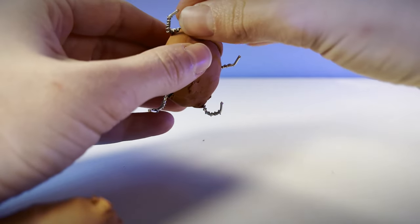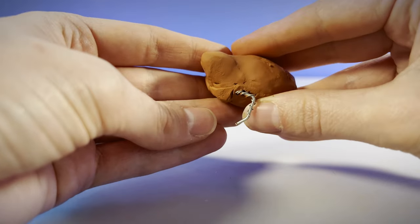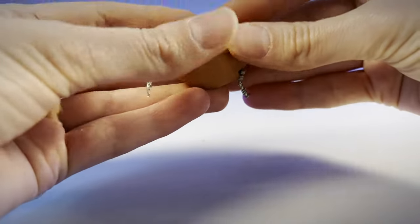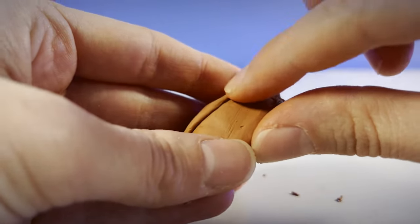Using those anatomical charts from earlier as well as photos of real breviceps rain frogs I begin blocking in the major muscle groups and add noodles of clay to slowly refine the shape of the frog.